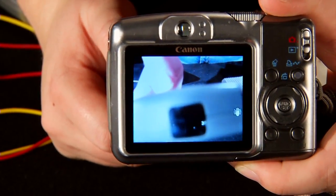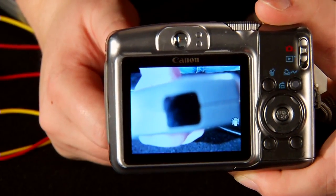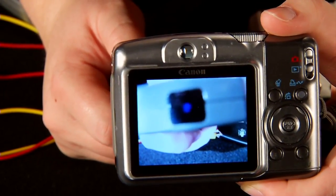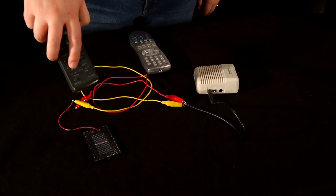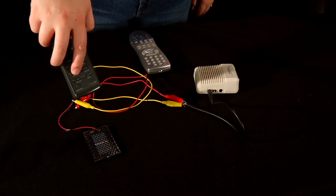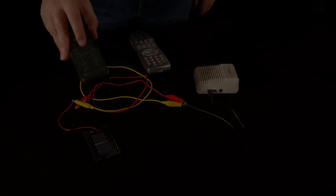In the case of the camera, when you point the remote at the lens and press a button, you will be able to see a light on the view screen, even though you can't see one with your eyes. With the circuit, you point the remote at the solar cell. Pressing buttons creates a noise in the amplifier speaker.